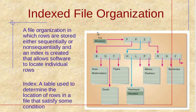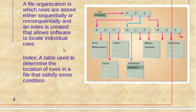Index file organization is an important type where indexes are made, just like the table of contents in a book. Some indexes are made for the files, and by looking at the index we can directly know where the files are located and move to that file to access it.